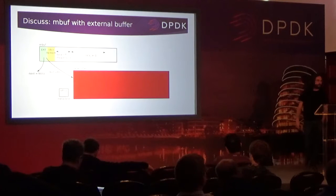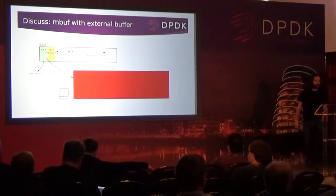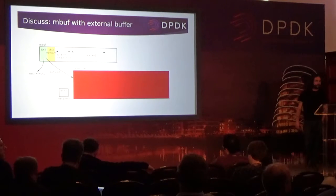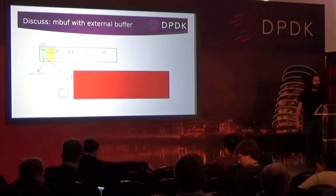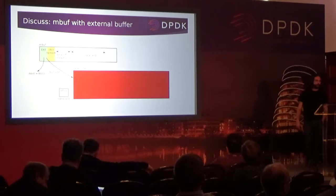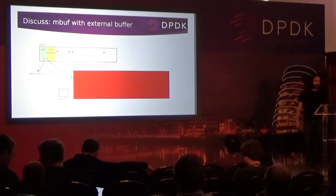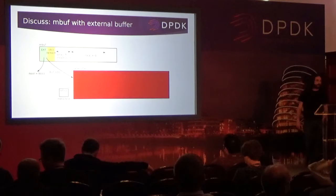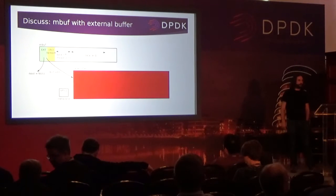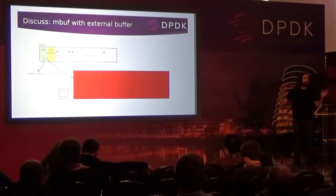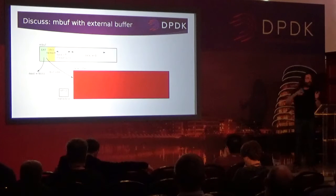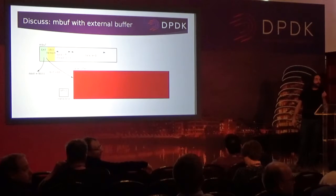I agree with Bruce that a callback on every buffer would kill performance. My thought is: could we have a special mempool that would have only mbufs attached to external buffers? That mempool would probably run without cache, and whenever you call mbuf free, it would know internally how to deal with that. So you don't have to do this via per-buffer callbacks — you could accumulate a bunch of these mbufs and then invoke free for a bunch of them in one go. Basically, make the callback be at the pool level rather than per-mbuf.